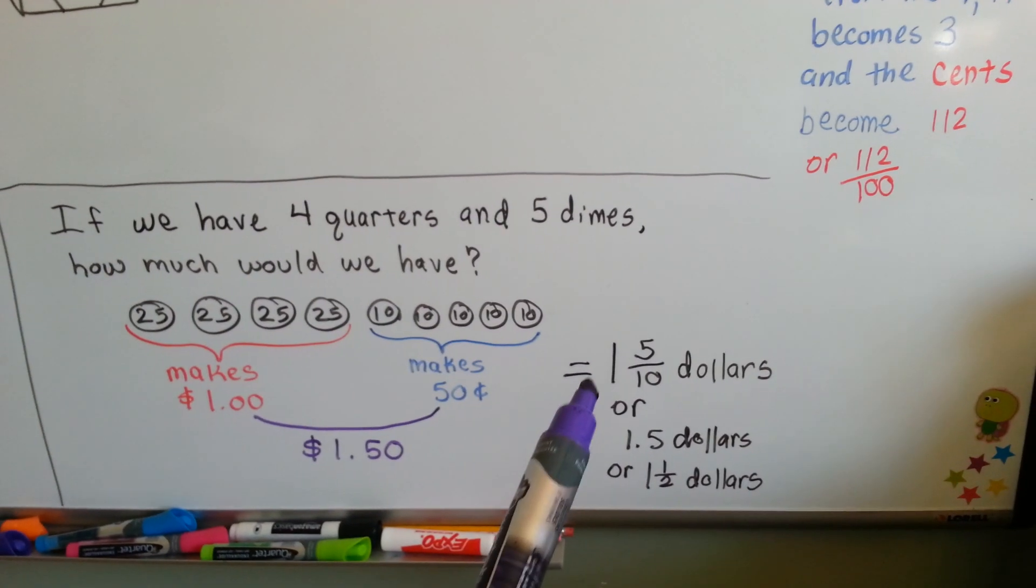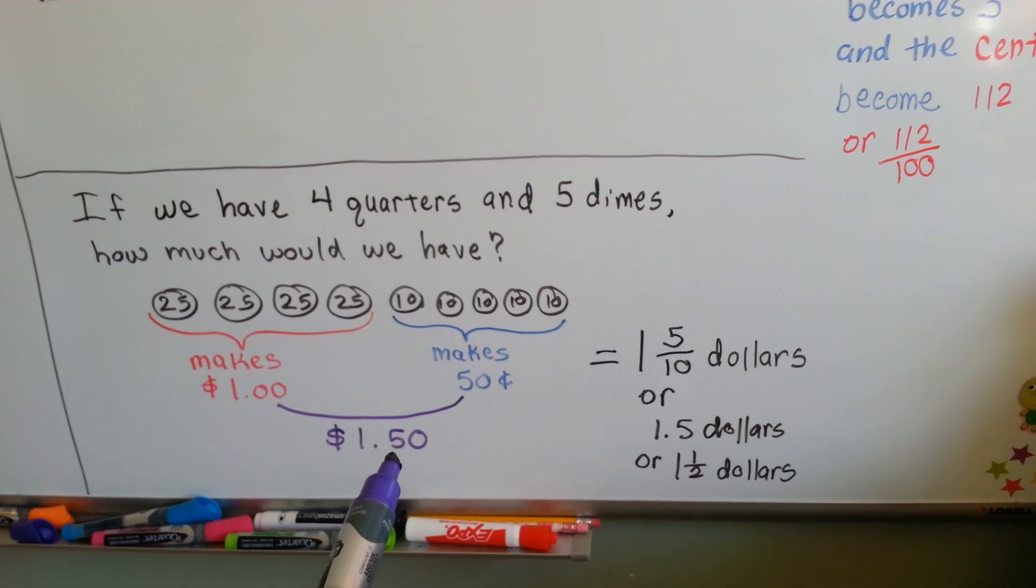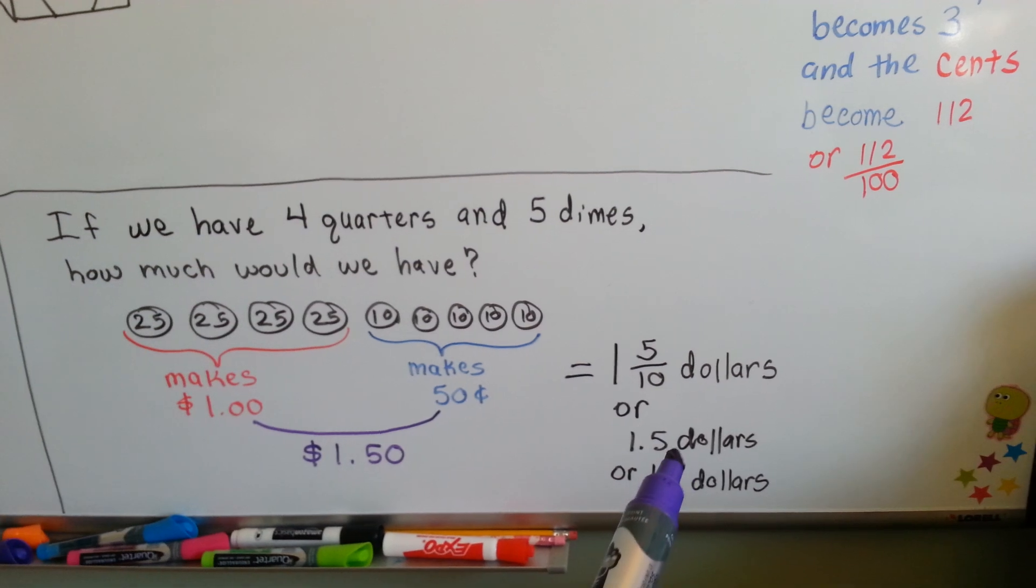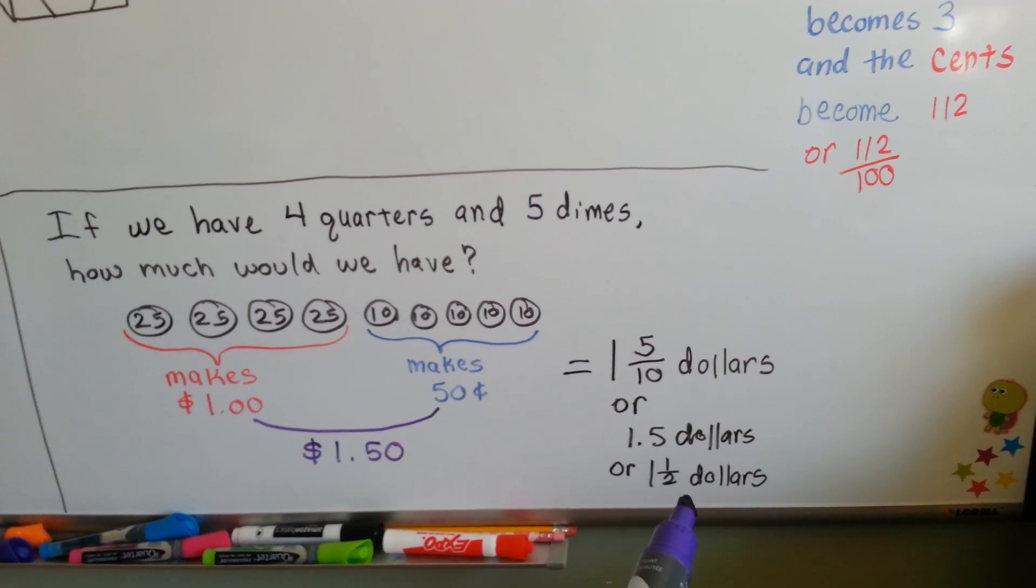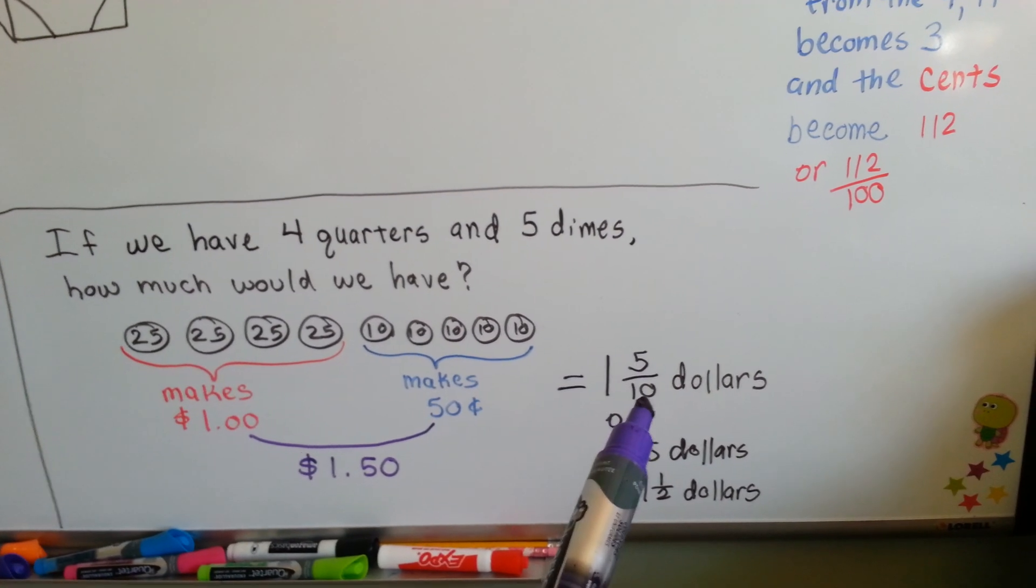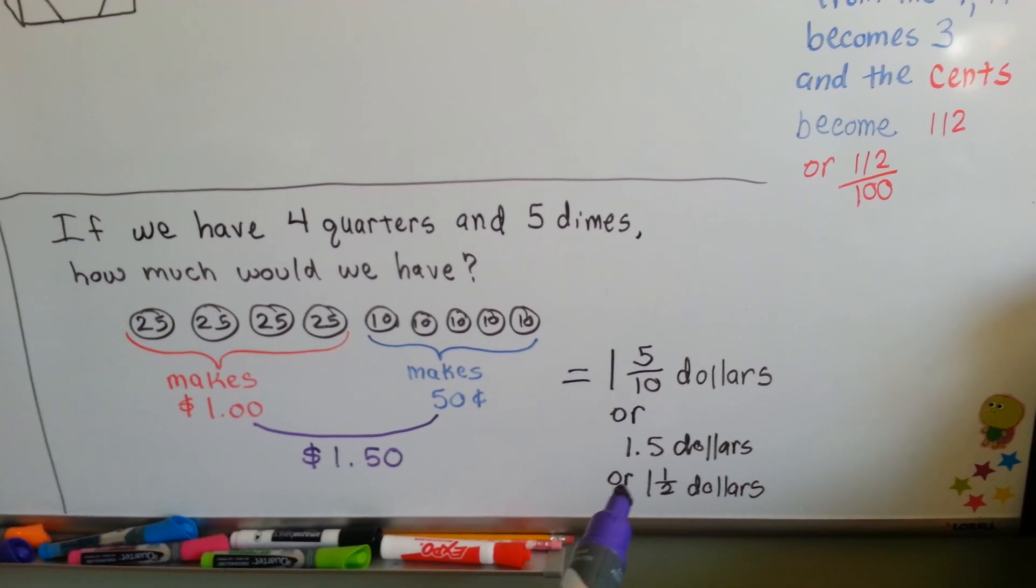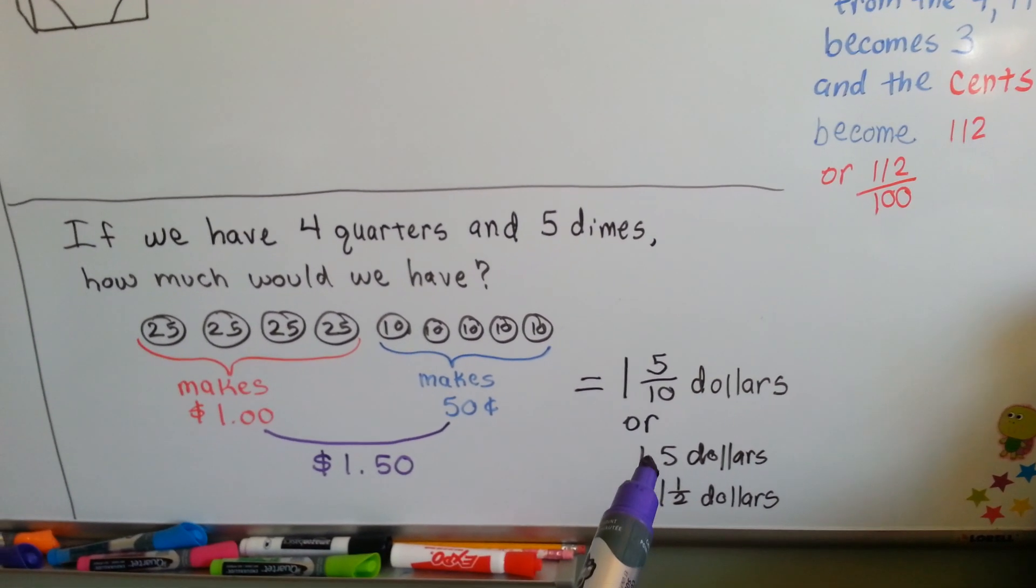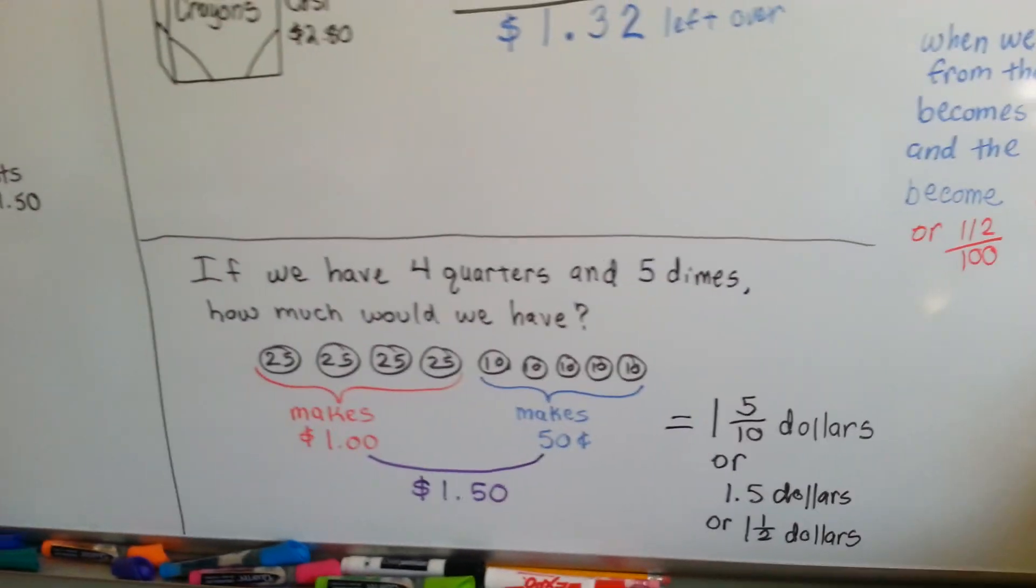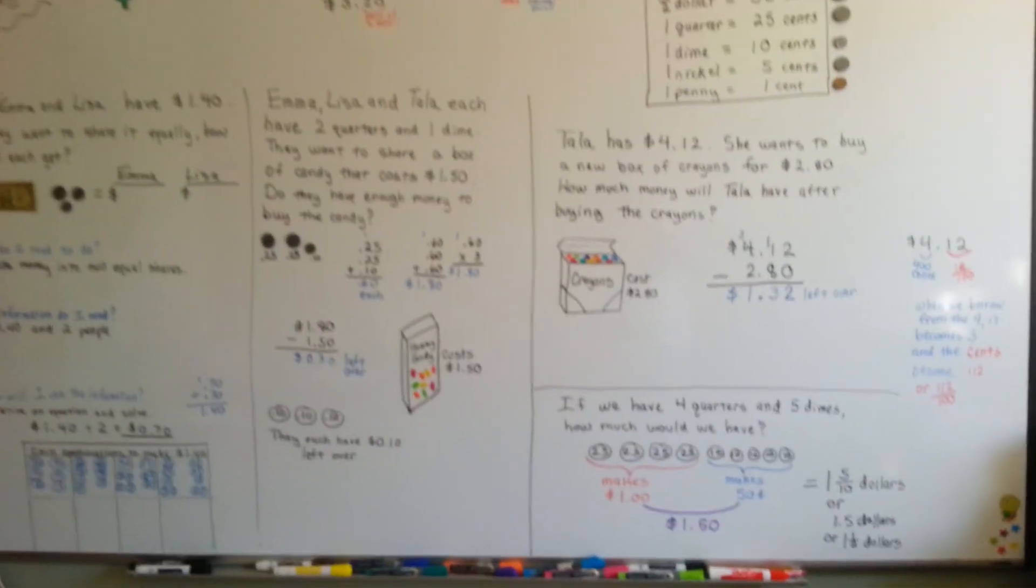A dollar fifty is also one and five tenths. See the five is in the tenths place? We could say one and five tenths dollars written as a decimal like this or one and a half dollars. How do we get a half? Because five tenths is a half. If something's split into ten and you've got five of it, you've got half of it. So, if you can remember that the point five means half, that's going to help you in math in the future. When you see point five or five tenths, that's a half.